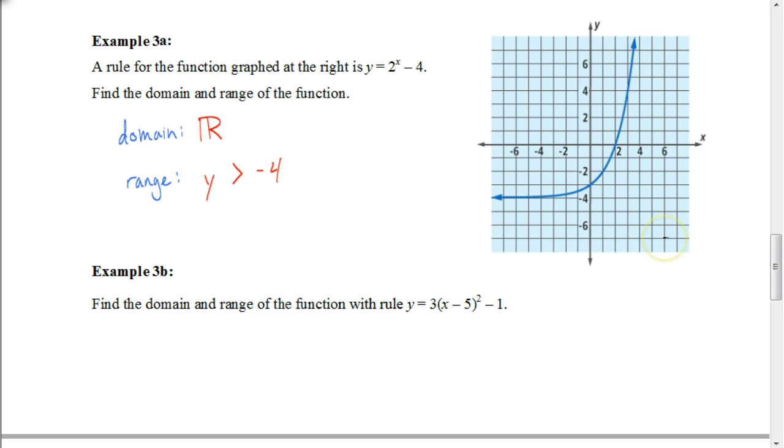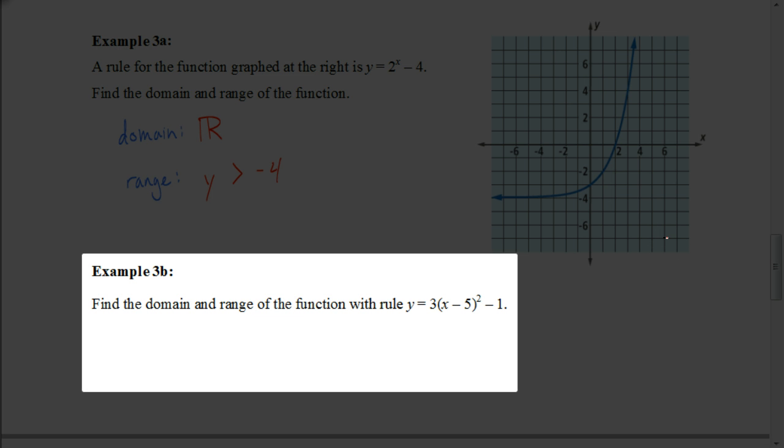So let's look at the other one. Here we have the equation y equals 3 times x minus 5 quantity squared minus 1. So again, we don't have a graph. But for this one we could find our domain by just looking at the equation. And you can see that you can put anything you want in for x. So my domain would be all real numbers.